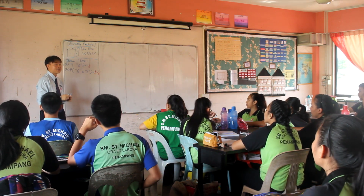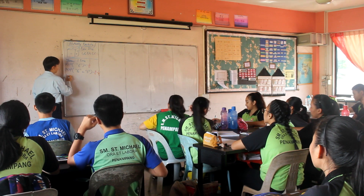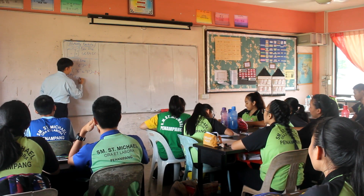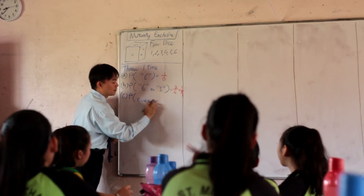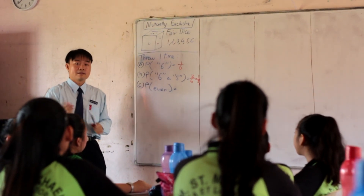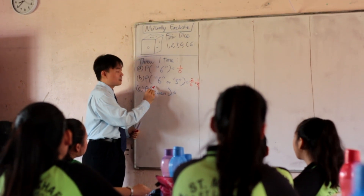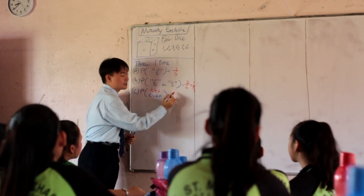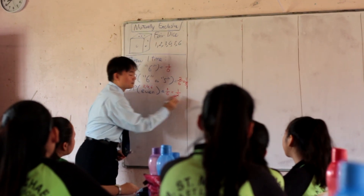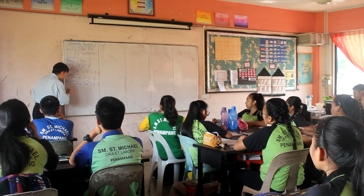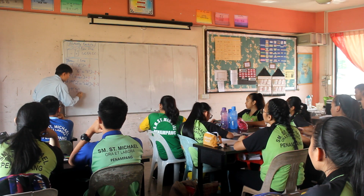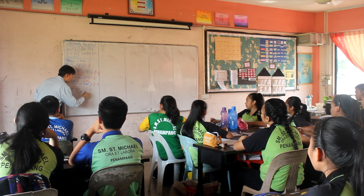What about the probability of getting an even number? Three over six — because the even numbers are 2, 4, and 6. What about the probability of getting a 2 or an even number? Since 2 is already included in the even numbers, it is repeated in this case.